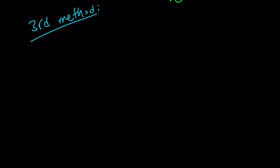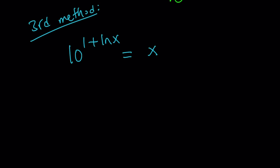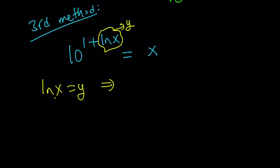The third method uses substitution, and that makes a lot of sense here because we have a variable in the exponent. Let's go ahead and call this y — so ln x equals y. This implies, because the base is e, that x equals e to the power y, from the definition of logarithms.